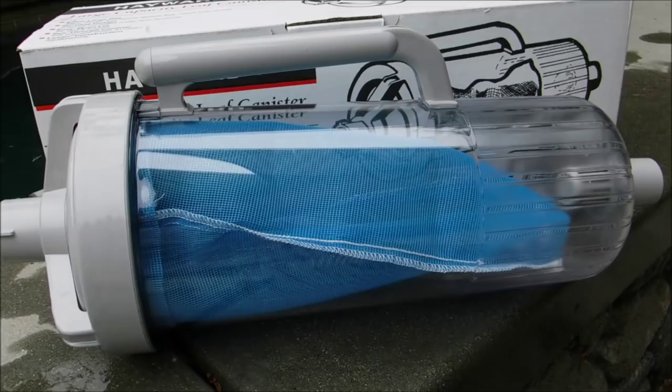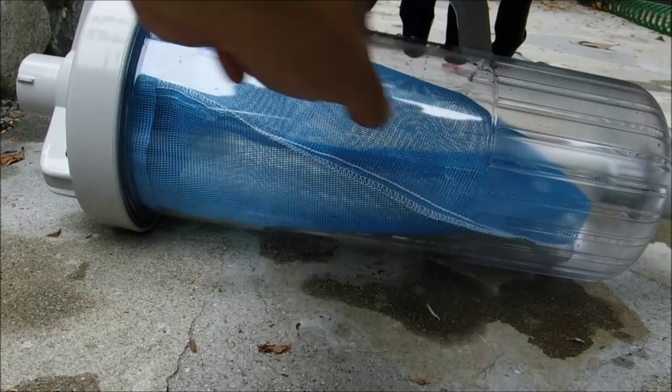I'll show you the Hayward W530 large capacity leaf canister. One of the nice things it has is this clear plastic so you can see if there's debris in the bag.